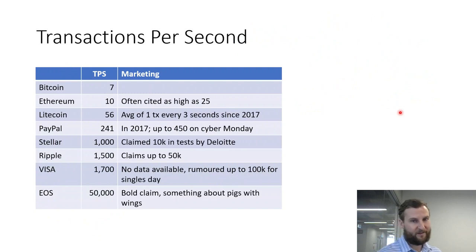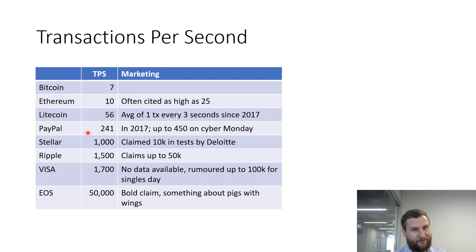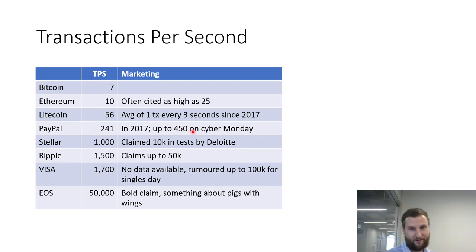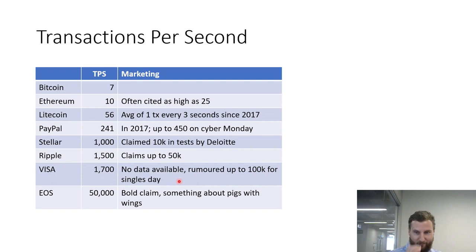Let's compare to other systems ordered by transactions per second. PayPal does 241 transactions per second with a peak up to 450 on Cyber Monday (2017 data — it's proprietary so hard to get). Another blockchain claims up to 1,000, tested up to 10,000 by Deloitte. Ripple claims up to 50,000. Visa, non-blockchain, does 1,700 normally, rumored up to 100,000.